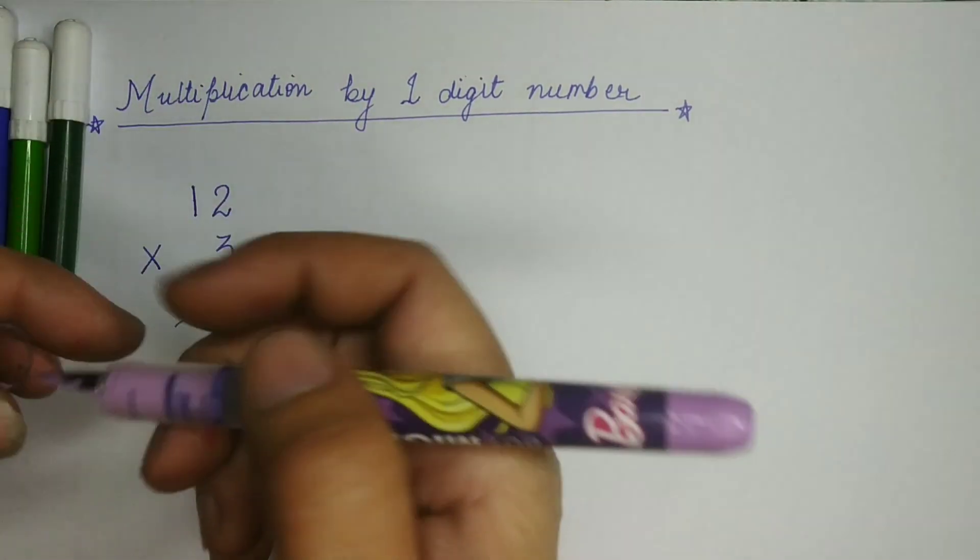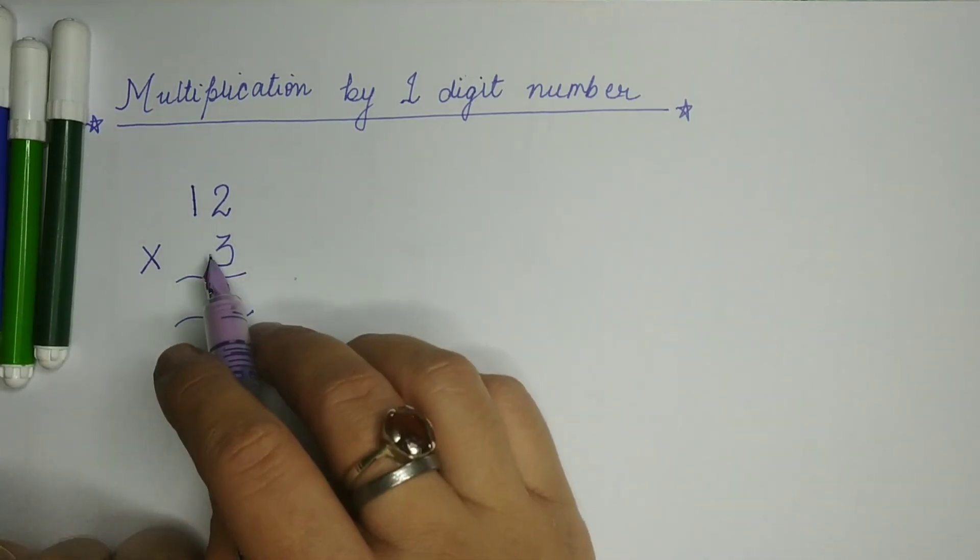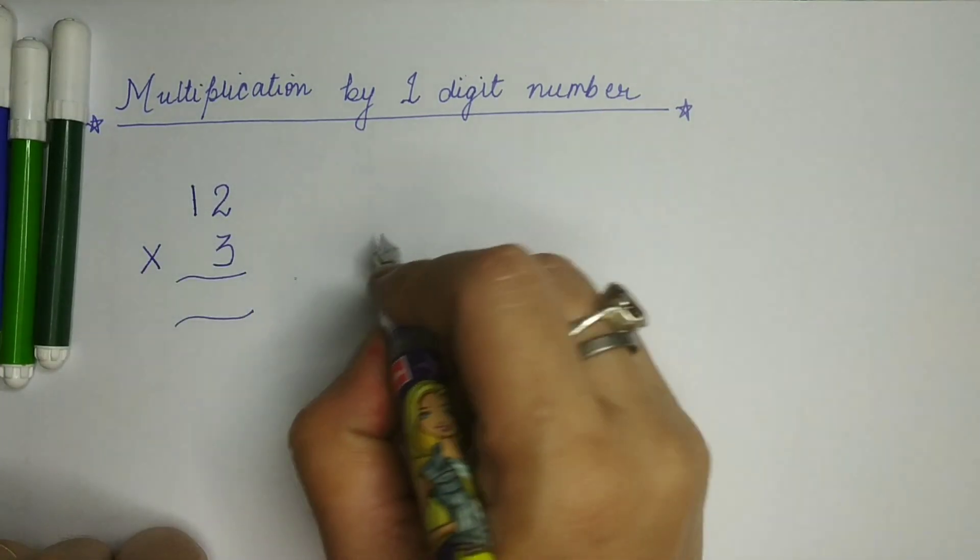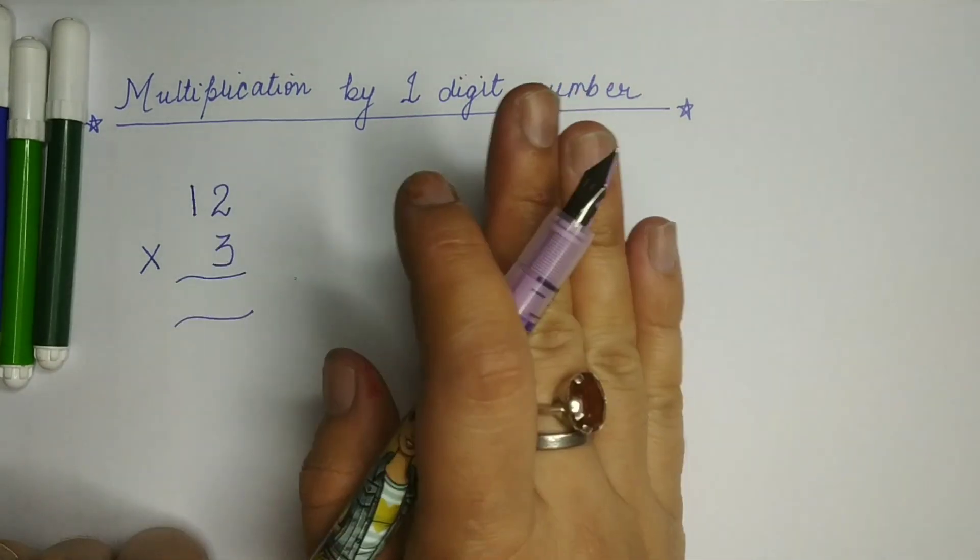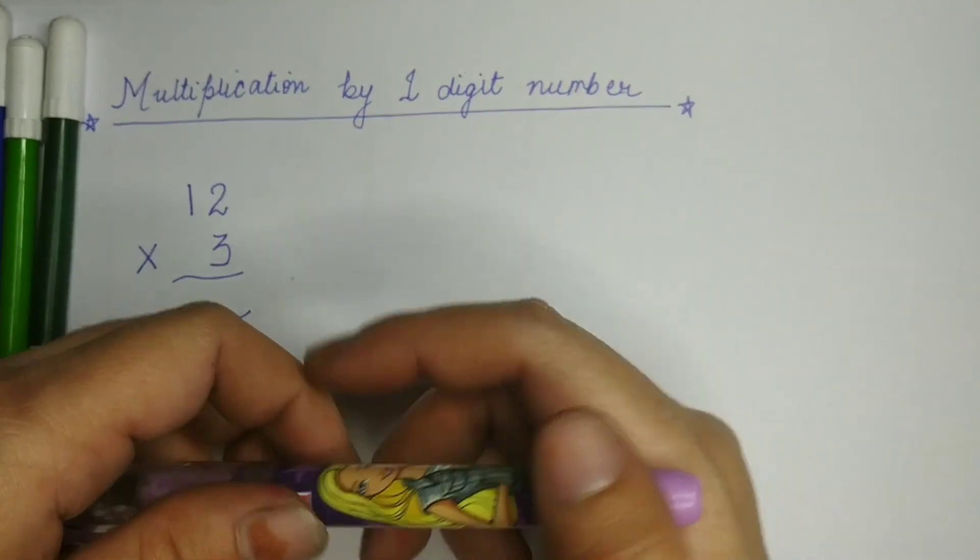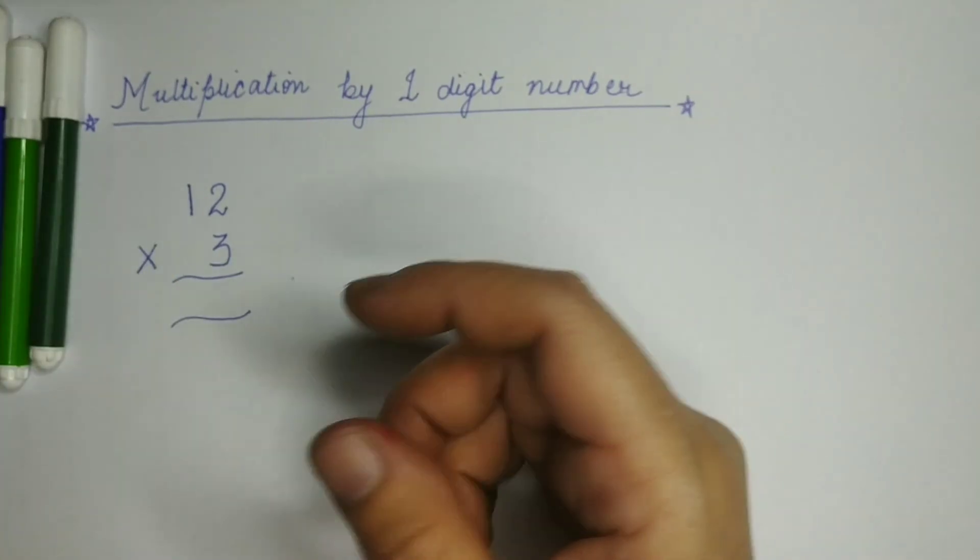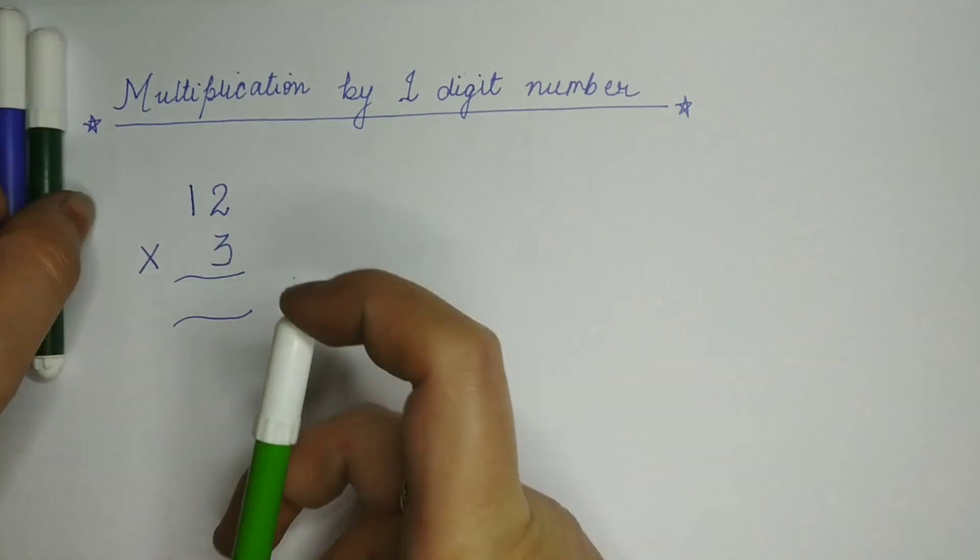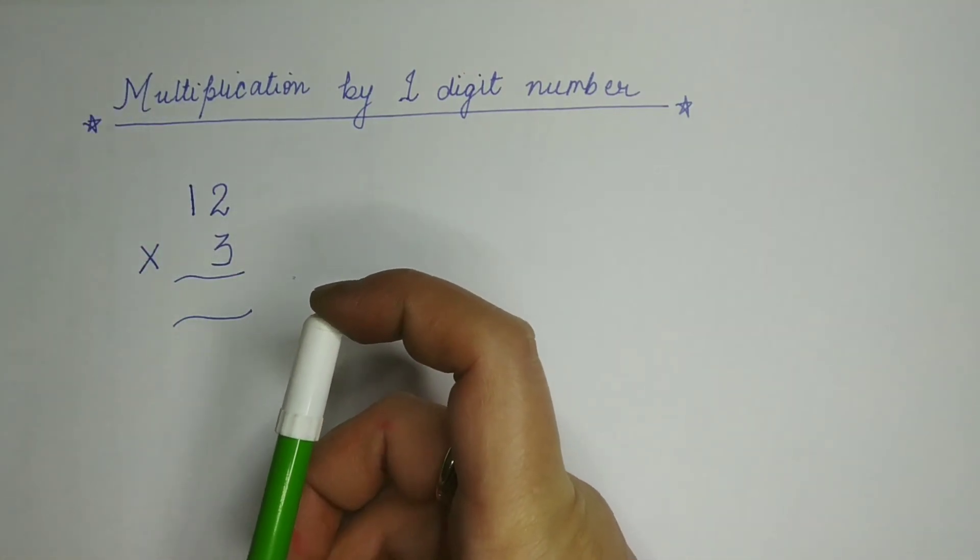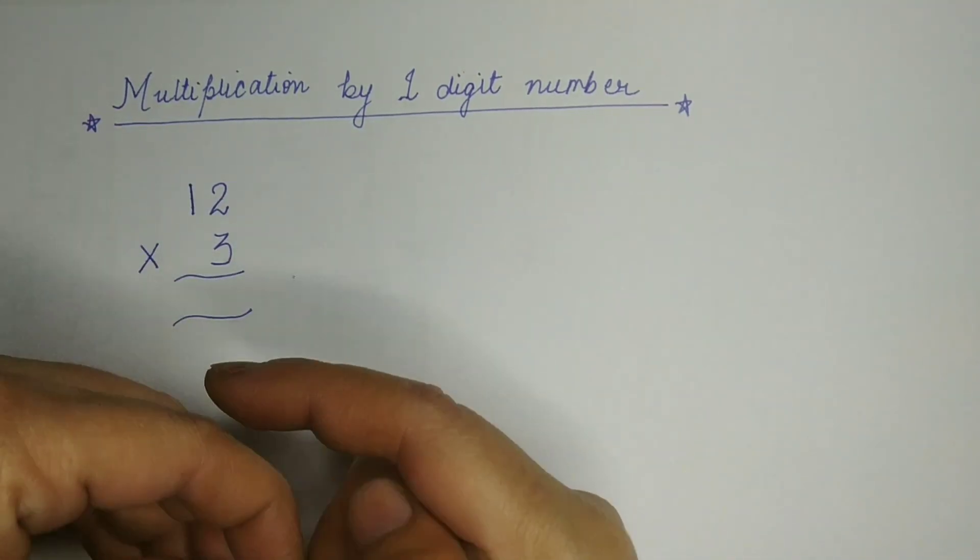Isko pehle mein aapko simple way mein karna sikhhaaungi. This is without regrouping. These numbers are without regrouping. Means koi bhi number yahaan carry over nahi ho raha hai. That we will learn some another day. So my dear children, I am going to tell you how we are going to multiply this number.